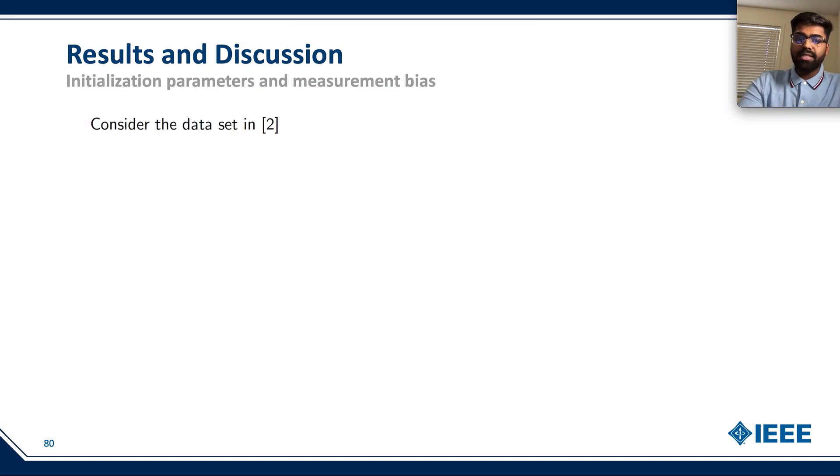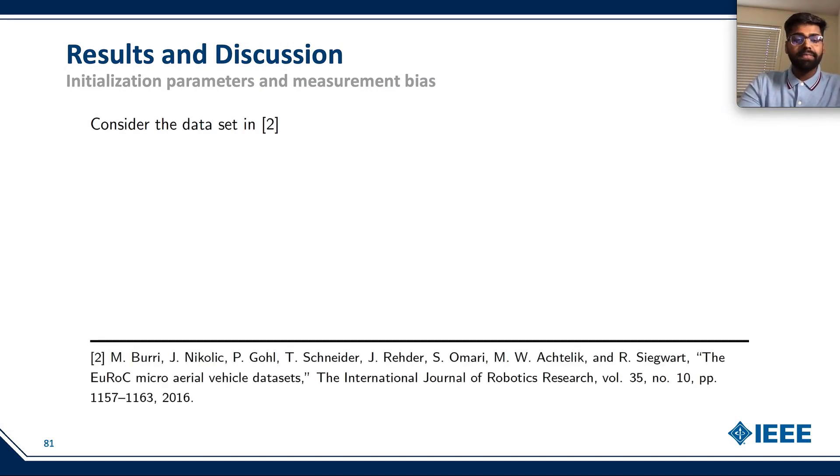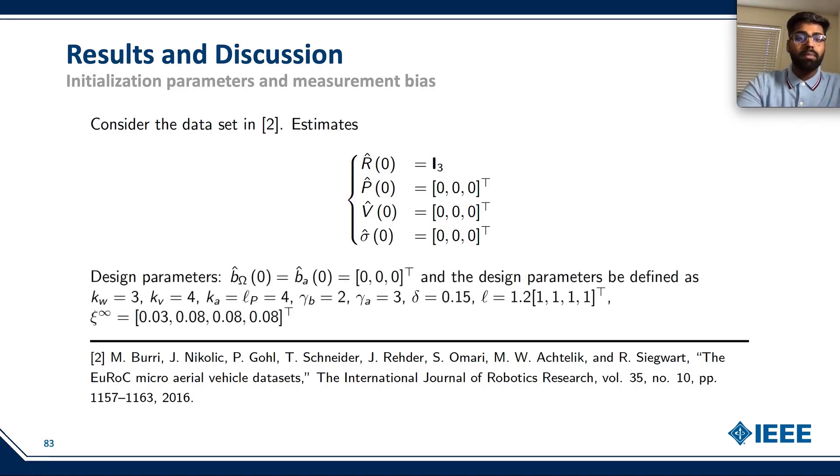For initialization of our measurements, we consider the data set in this reference. We consider the estimate r hat to be equal to the identity. Our p hat zero equals to v hat zero equals to sigma hat zero, which are all equal to zeros. And we select the design parameters as follows.